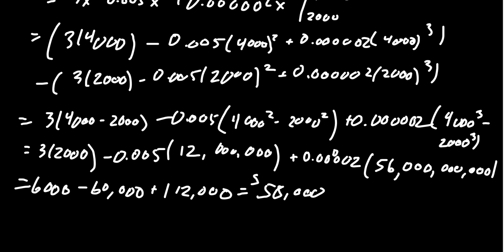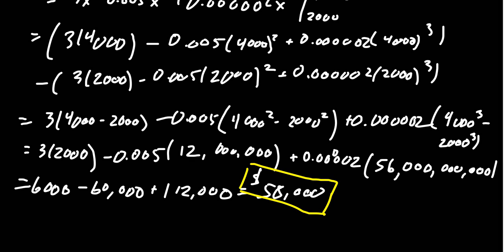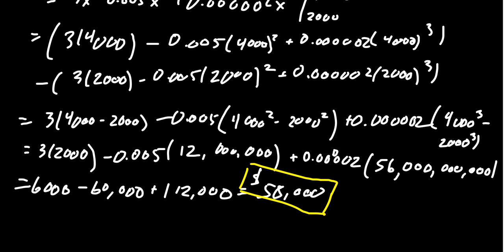And so this will be $58,000, which gives us the cost increase of going from 2,000 yards of fabric to 4,000 yards of fabric. With this one, it was the arithmetic that really is the problem. Use a calculator. Don't be a hero. But we can integrate a derivative to find the net change of the quantity. In this case, it was a change of cost.